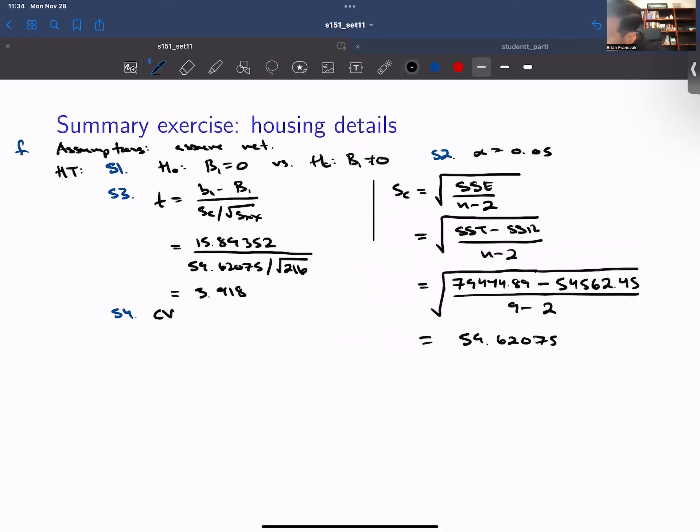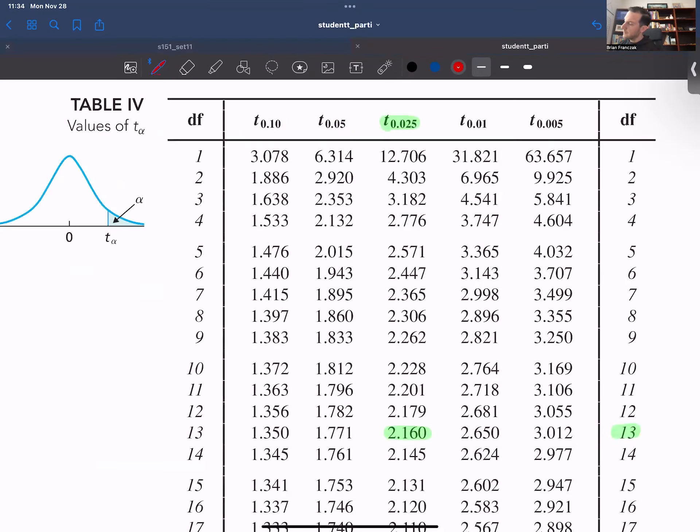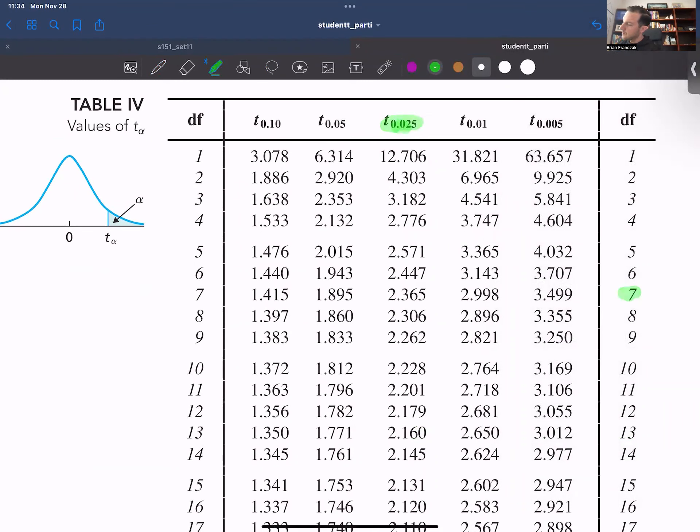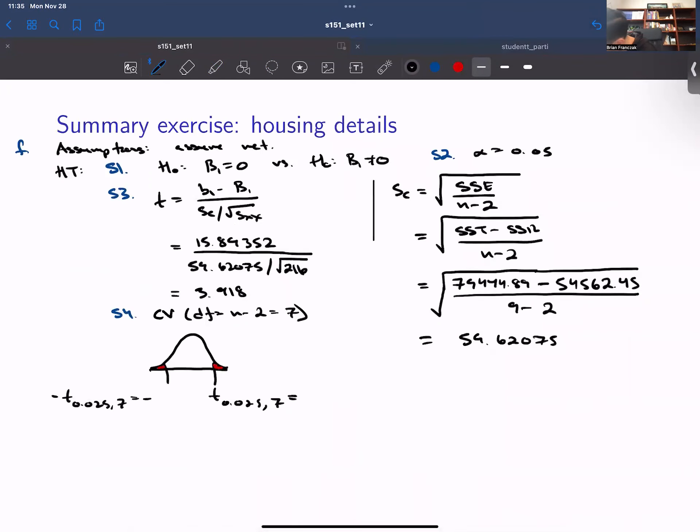So on step four we can take a critical value approach. Here the degree of freedom is n minus two which is seven. We're going to test in both the upper and lower tail. So we go back here we have seven degrees of freedom 0.025. So that gives us 2.365. So our critical value for this test is negative 2.365 and 2.365.